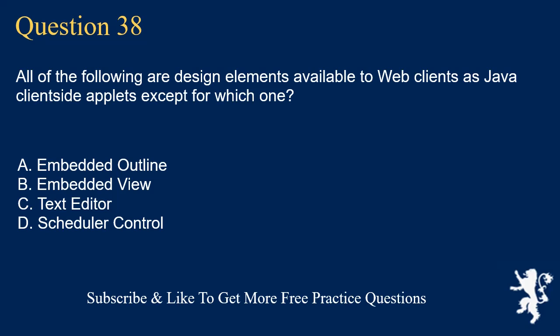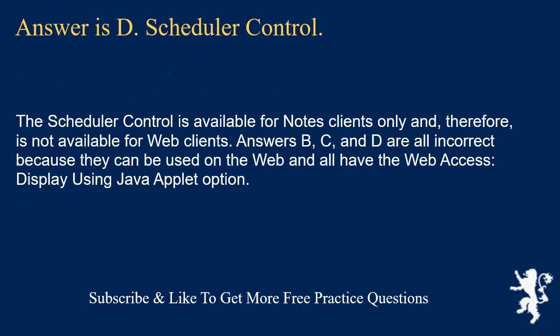Question 38. All of the following are design elements available to web clients as Java client-side applets except for which one? Embedded outline. Embedded view. Text editor. Scheduler control. Answer is D: Scheduler control. The scheduler control is available for Notes clients only and therefore is not available for web clients. Answers B, C, and D are all incorrect because they can be used on the web and all have the web access display using Java applet option.